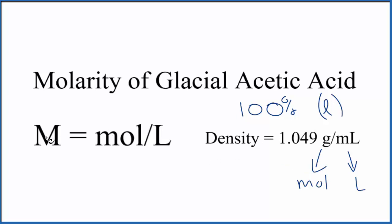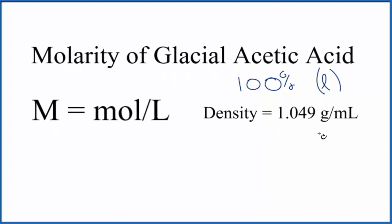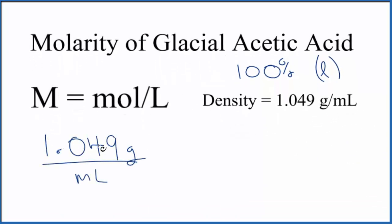Because then we have molarity equals moles over liters—we have our moles, our liters, we can solve this problem. So let's convert the density to liters. We have 1.049 grams in one milliliter, we're gonna multiply that by a conversion factor. There are a thousand milliliters in one liter, so we multiply the top, divide by the bottom.